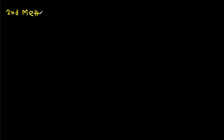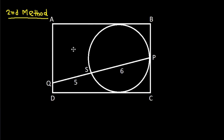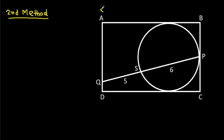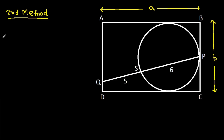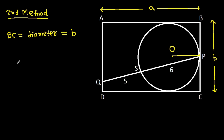Now the second method. Suppose AB is A and BC is B. BC is the diameter of the circle, that is B. Suppose the center of the circle is O, then OP will be the radius, and in any circle, the radius and tangent are perpendicular to each other, so these angles will be 90 degrees.